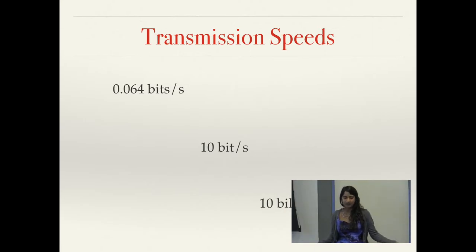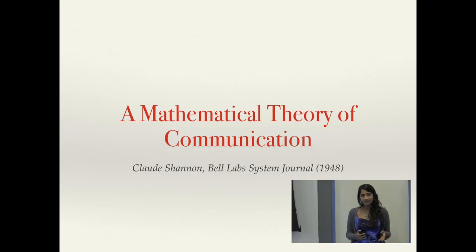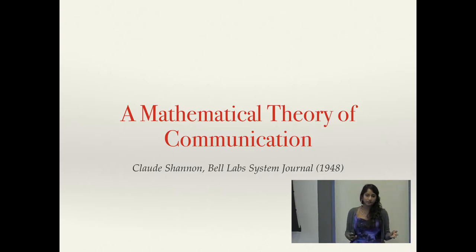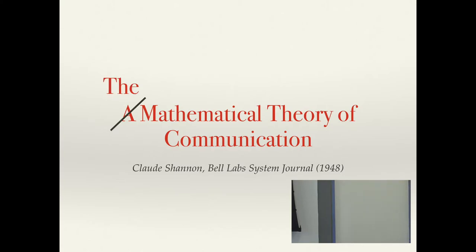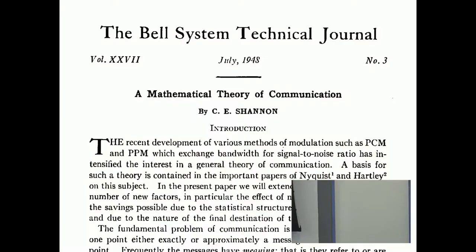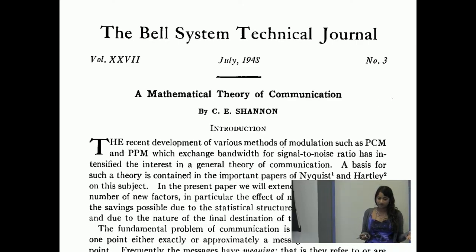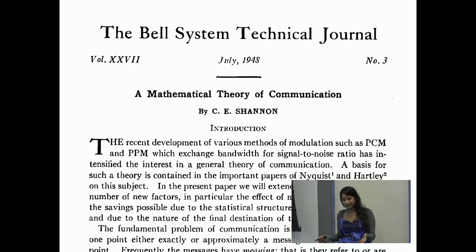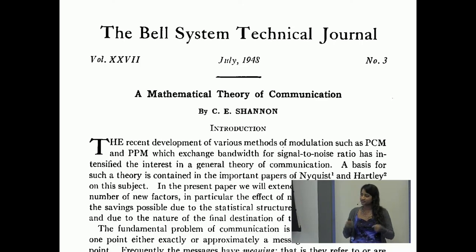This paper laid the fundamental science enabling us to get from the undersea cable of the 1850s to the modern communication system we have today. It was first published in 1948 in the Bell Labs System Journal and later republished as a book: 'The Mathematical Theory of Communication.' It's one of those rare papers that defined an entire field of study. The seeds of the paper first appeared in a classified Bell Labs memo about cryptography written by Shannon in 1945. Shannon's major contribution was unifying disparate threads of research from several different fields into a single defining paper.